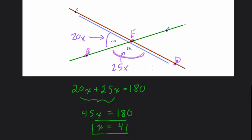But they want the value of BED, and that's 25X. That's the value of angle BED. If X is 4, then it's 25 times 4, or 100. And that's the value of angle BED. And that's in degrees, so 100 degrees. Thanks.